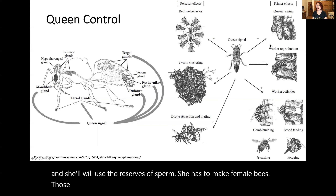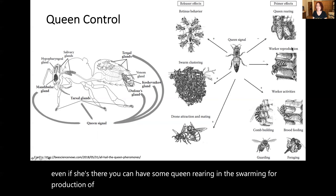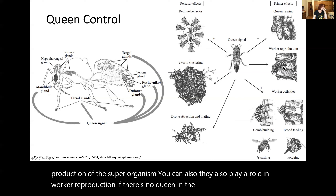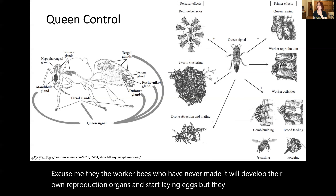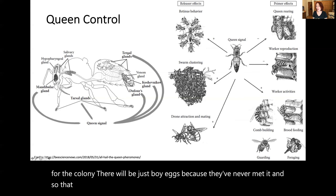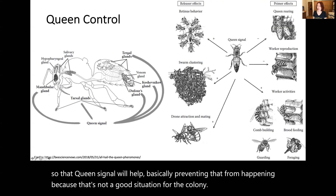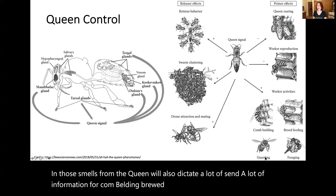The absence of those signals can induce queen cells being developed in some cases. Even if she's there, you can have some queen rearing in the swarming reproduction of the superorganism. Those signals also play a role in worker reproduction — if there's no queen in the colony, worker bees who have never mated will develop their own reproduction organs and start laying eggs, but they will not be viable for the colony; they will just be boy eggs. So that queen signal helps prevent that from happening, because that's not a good situation for the colony. Those smells from the queen also dictate a lot of information for comb building, brood feeding, foraging, and guarding. She's really very important, and the bees pay close attention to all those chemical pheromone messages from the queen.